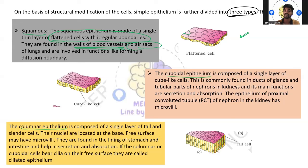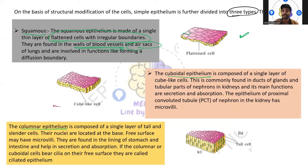What is the function of squamous epithelium? It involves forming a diffusion boundary. Squamous epithelium helps in the diffusion boundary — so if air intake has to be released or blood has to move from one place to another, that function is carried out by squamous epithelium cells.